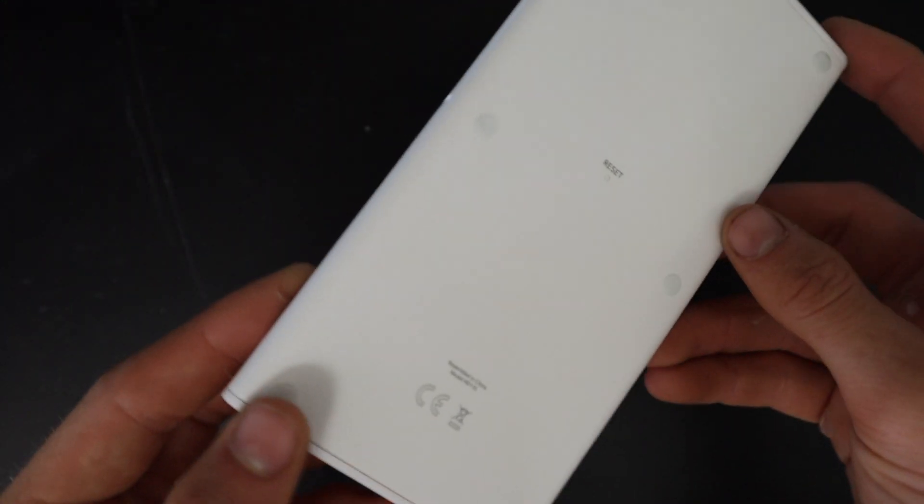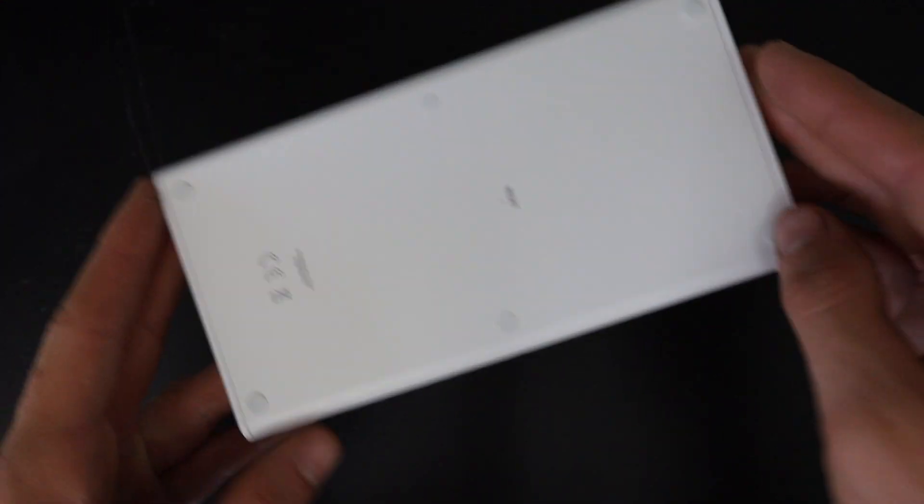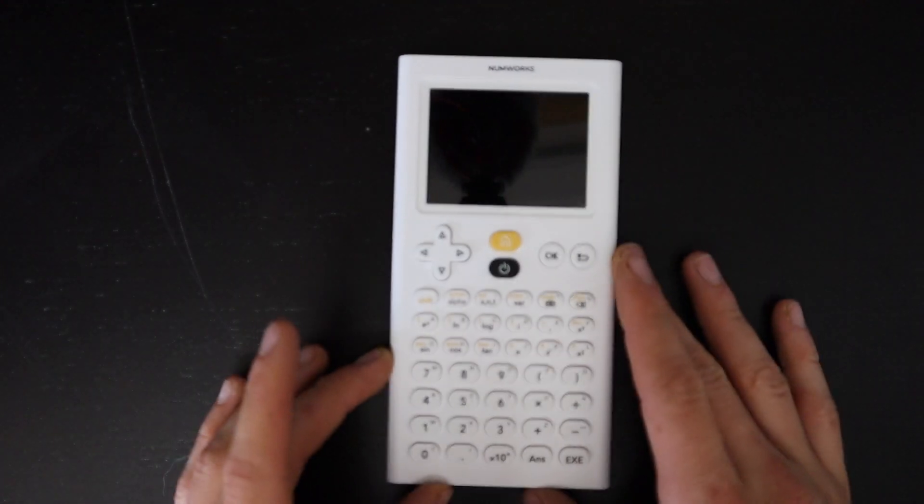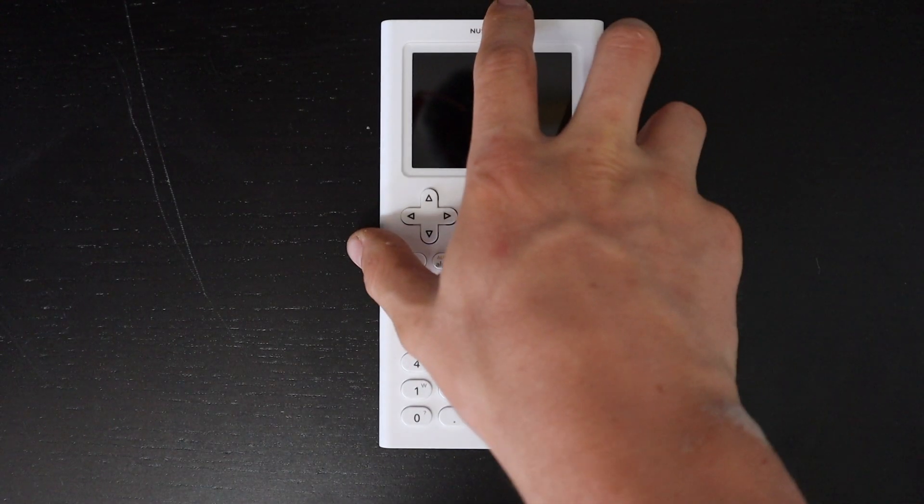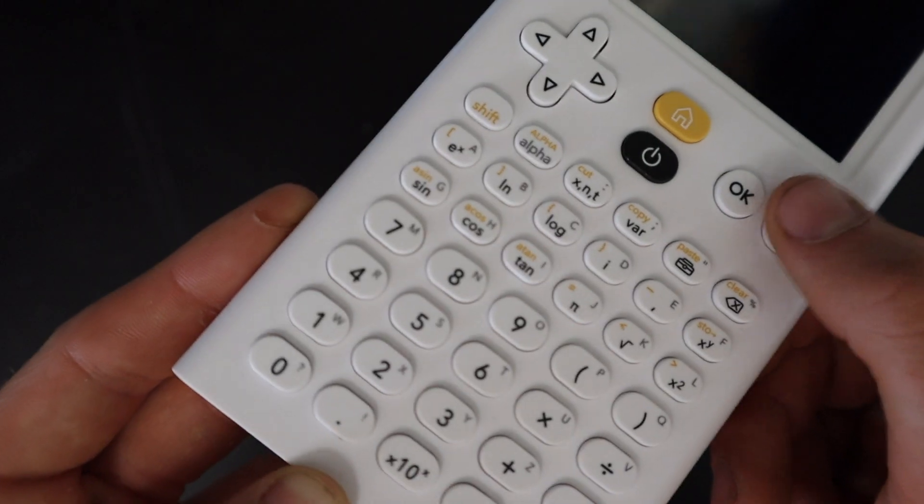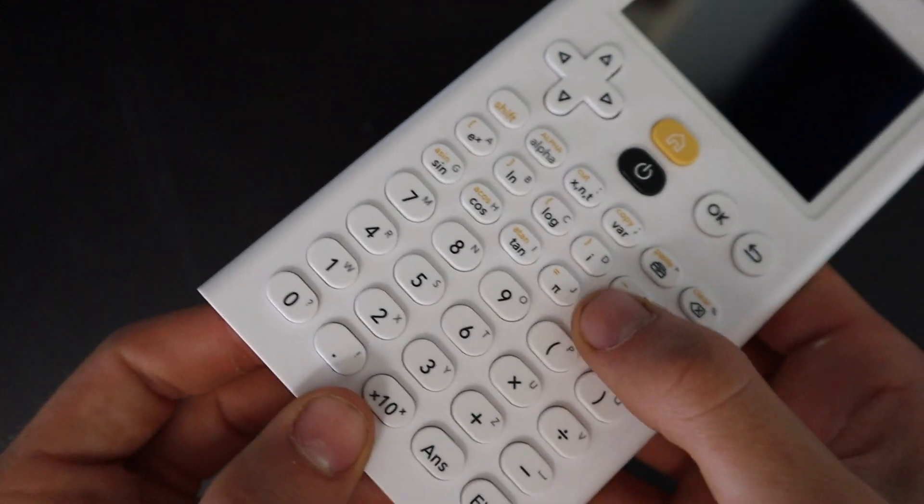On the back there is no battery panel or anything, just a reset button there in the middle and then six pads that allow you to set this thing flat on the desk so it doesn't slide around super easily.